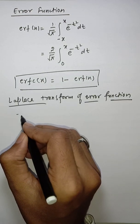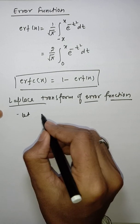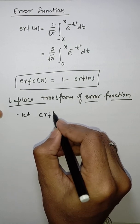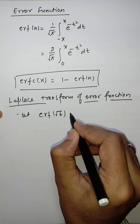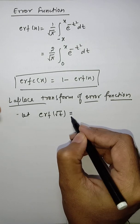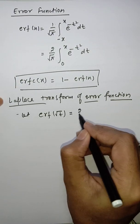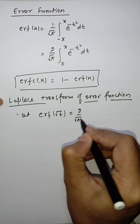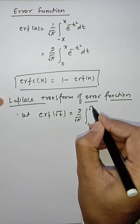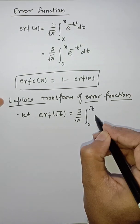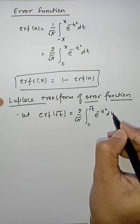Let the error function be erf(√t). By the definition of the error function, this is equal to (2/√π) × integral from 0 to √t of e^(−u²) du.